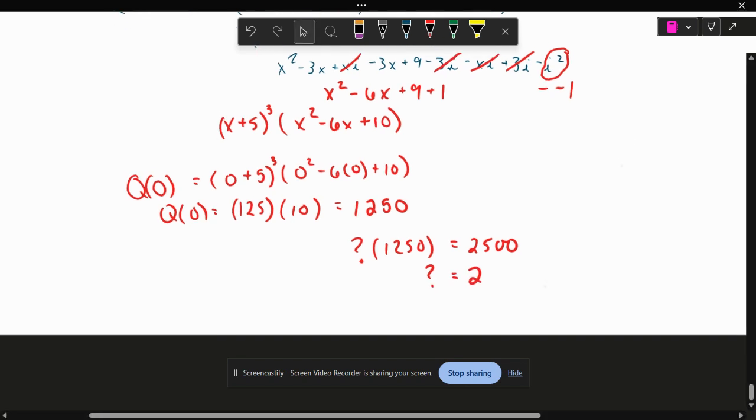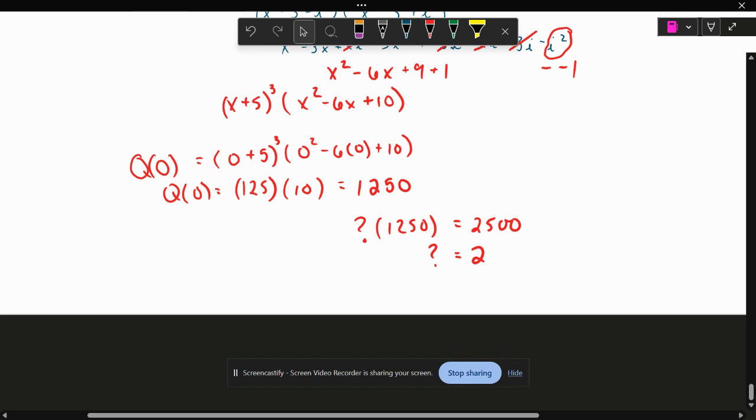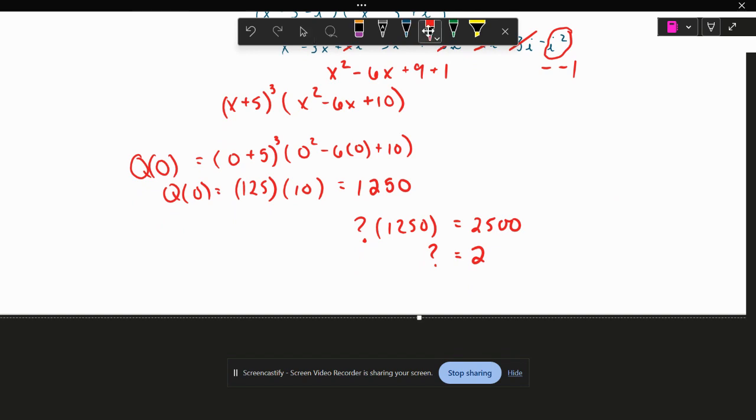So what we'll do is we'll add that at the beginning of our problem, almost like an a value. So our final equation will read Q(x) equals two times x plus five cubed times x squared minus six x plus 10. And that will be the final factored form.